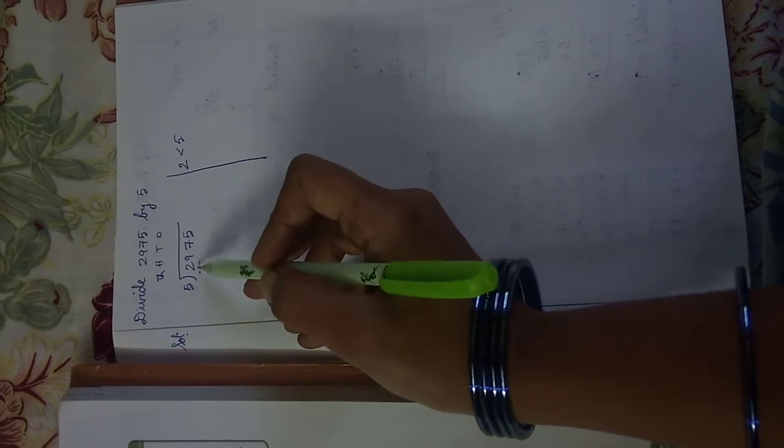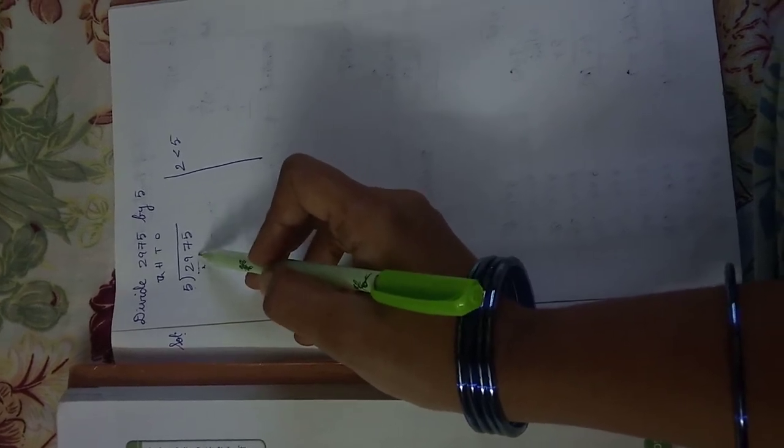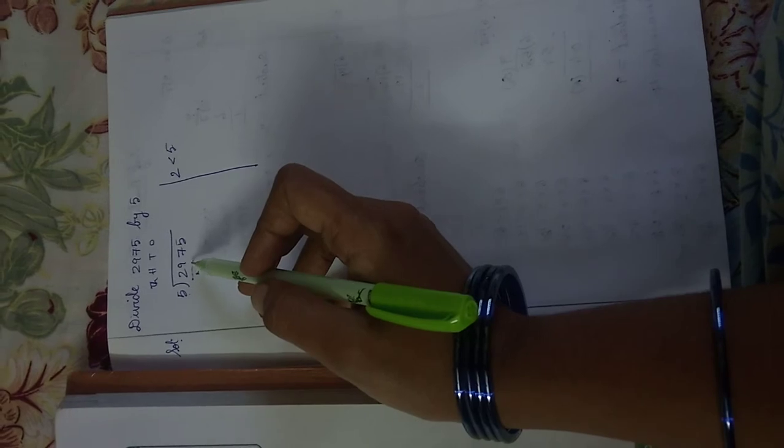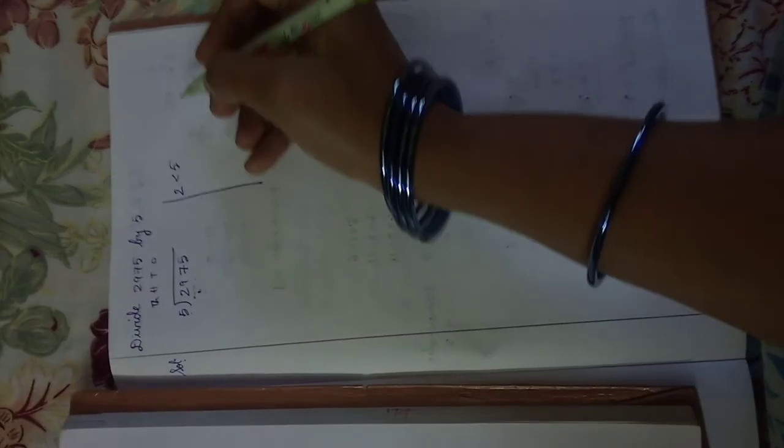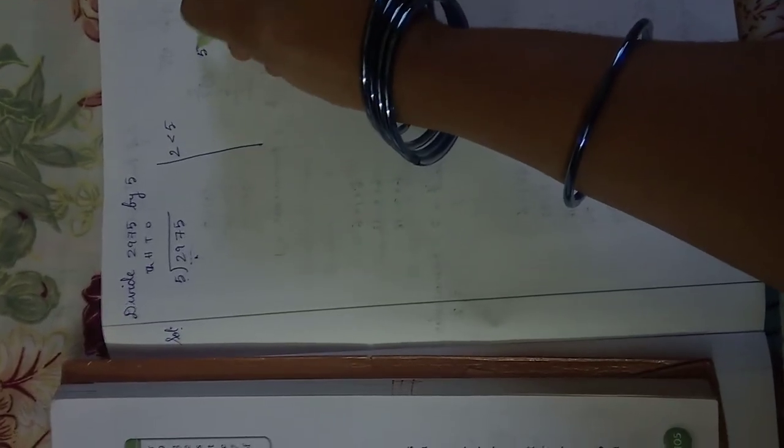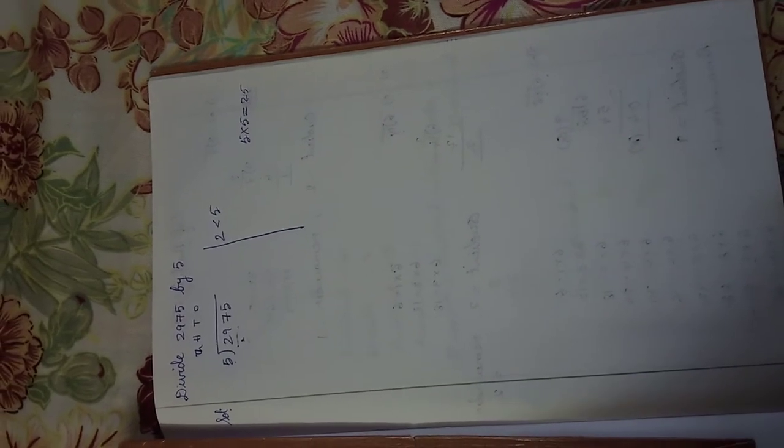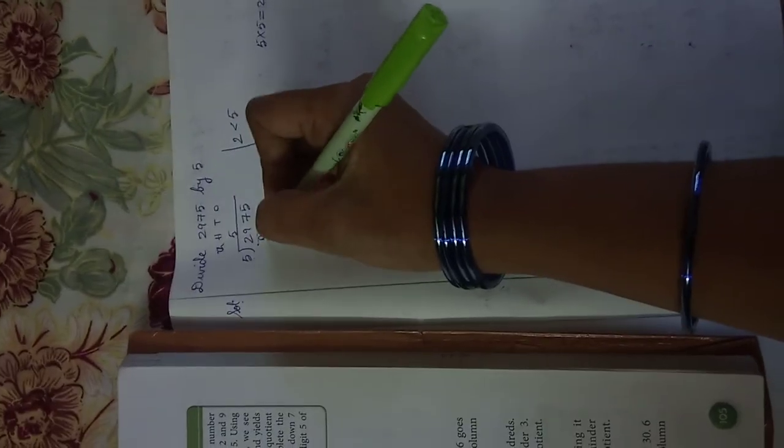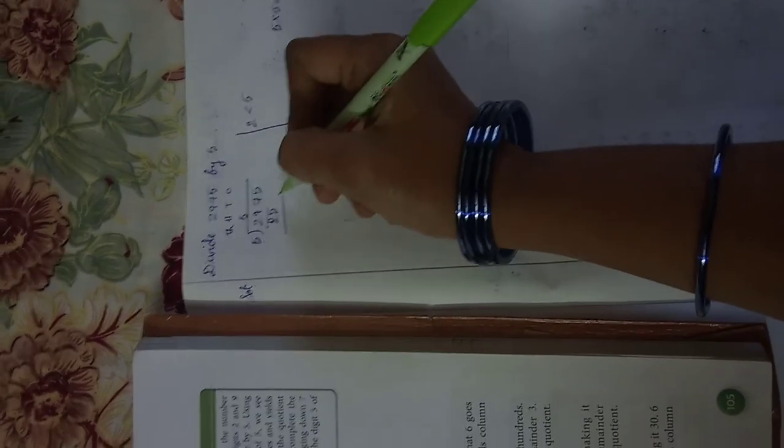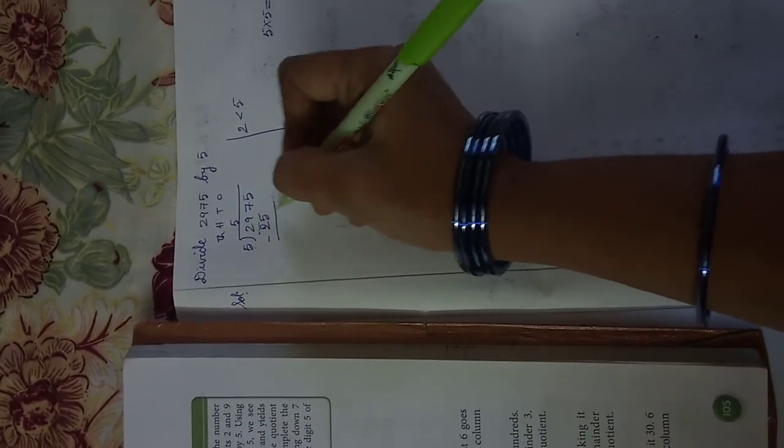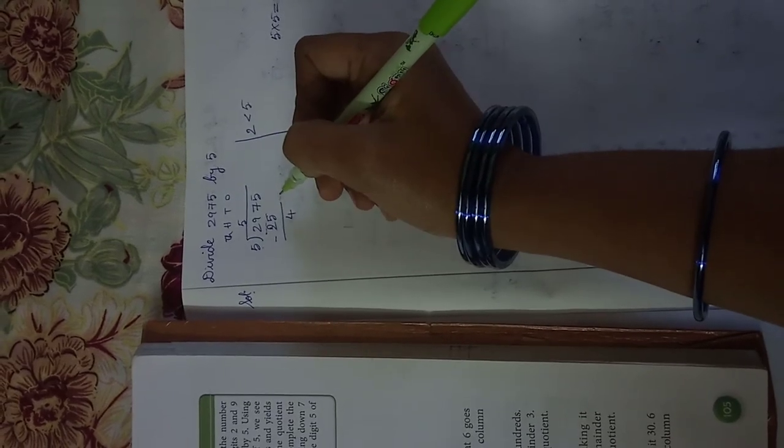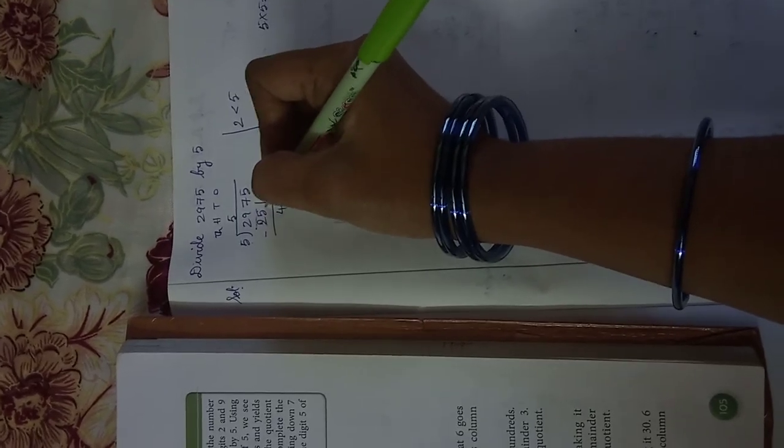29 is divisible by 5. Using the multiplication table of 5, 5 fives are 25. So 9 minus 5, that is 4. We put down 7.